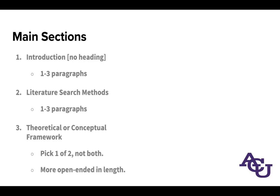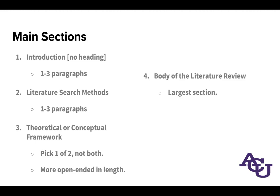The third section is going to be your theoretical framework or your conceptual framework — it should be one of the two, not both. I've seen some people write separate theoretical and conceptual framework sections; it's usually because they're confused about the distinction, and it's a lot of unnecessary work. You should have one section, called either theoretical framework or conceptual framework. That can be more open-ended in length, because sometimes the framework someone picks is deeply related to the research design and there's a lot written about it. But it should definitely be smaller than the body of the literature review, which should be the largest section by far — larger than all the other sections combined, several times over, usually.